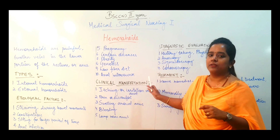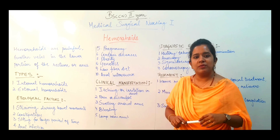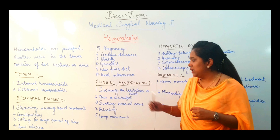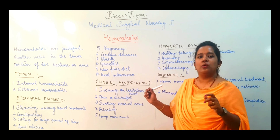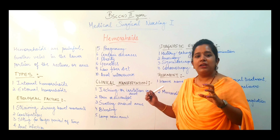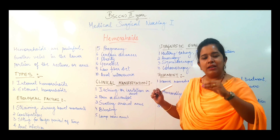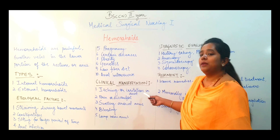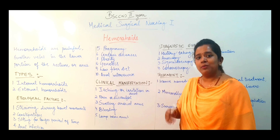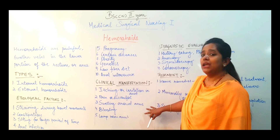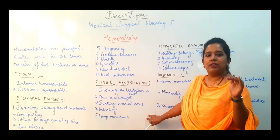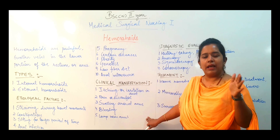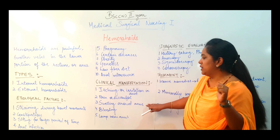Next is clinical manifestation — the symptoms commonly seen in hemorrhoid patients. In the anal region, there will be irritation and itching, especially if there is an internal hemorrhoid or a hemorrhoid that is hanging out. Then, pain and discomfort in the area where hemorrhoids are, or in the anal or rectal region. There can also be bulge or swelling of the skin layer near the anus.